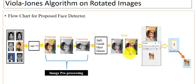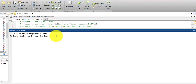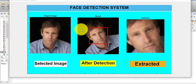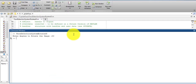You can see the faces detected in both grayscale and RGB. After face detection, our proposed face detector will automatically extract the detected face from the digital image and save it in a folder on the device. For example, suppose the angle is 30 degrees — you can see the selected image, the detected face after rotation, the extracted face, and it is automatically saved in the device.